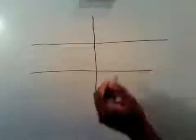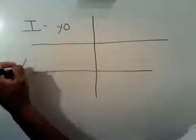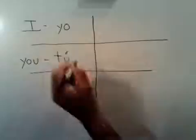In box number one, we're going to put the pronoun I. In Spanish, that is yo. Box number two is you. In Spanish, that is tú — with an accent mark over the U that starts from the left and goes up to the right.